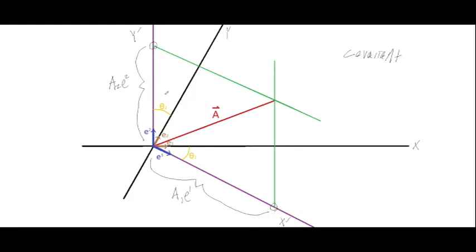You can see that our basis vectors are not necessarily the same size. If the bases are orthonormal — 90 degrees from each other — then they will equal each other. But if one of the axes is diagonal, they will not be equal. The dual basis can be calculated: the first dual basis vector e¹ equals 1 divided by e₁ times cosine of the angle theta₁ between x and x-prime.